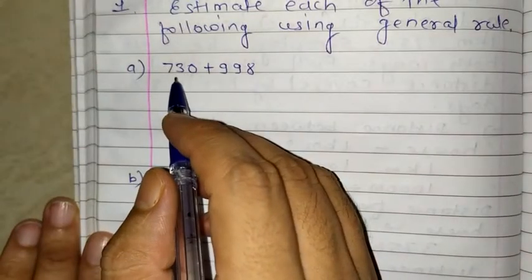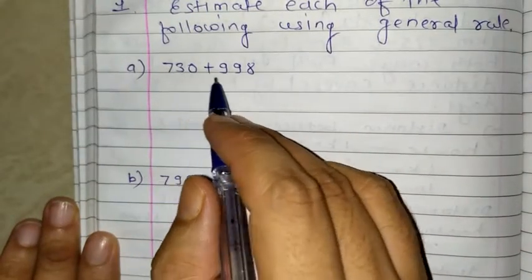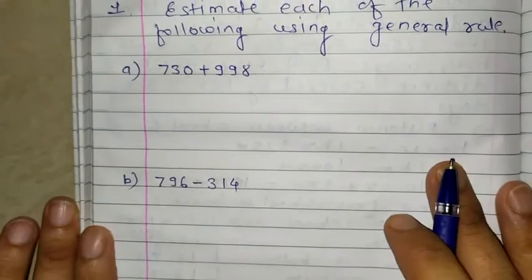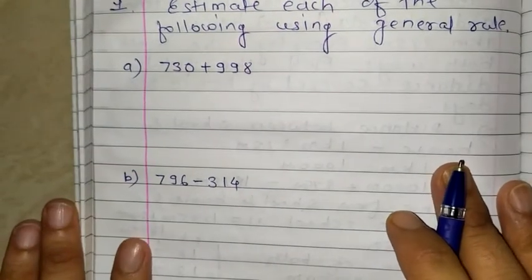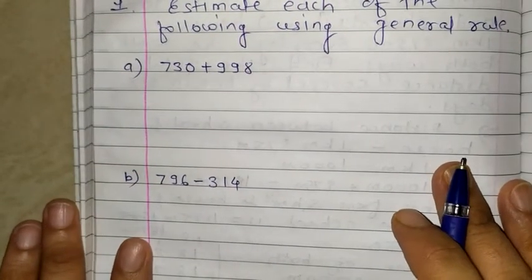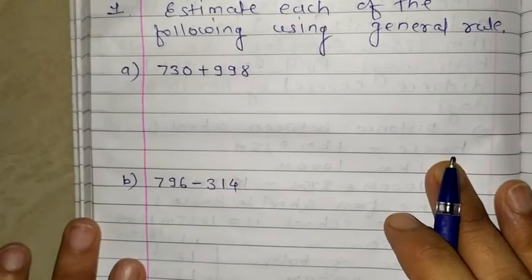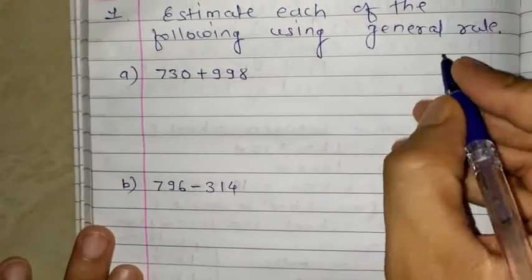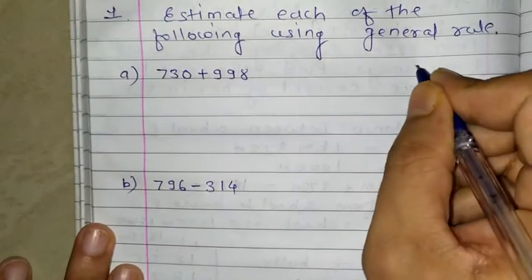The first question is 730 plus 998. You have to convert into the estimate value, which means you have to convert into the round off value. The first number is 730.